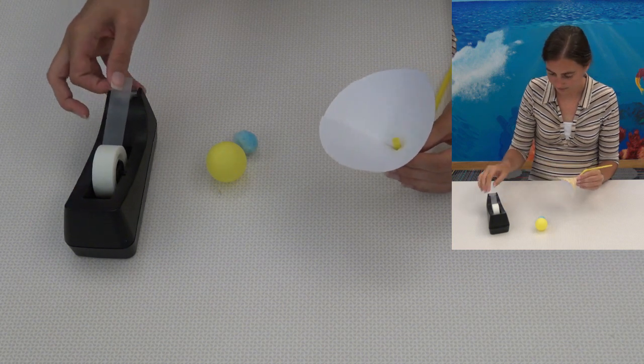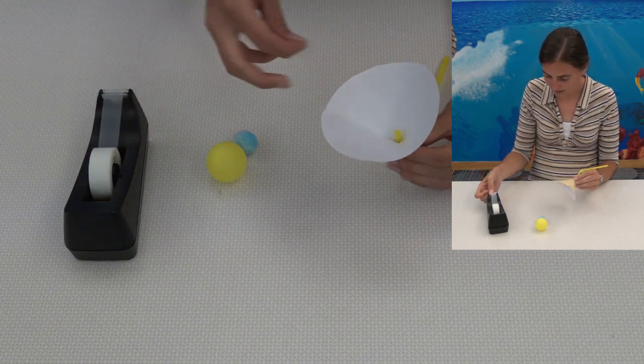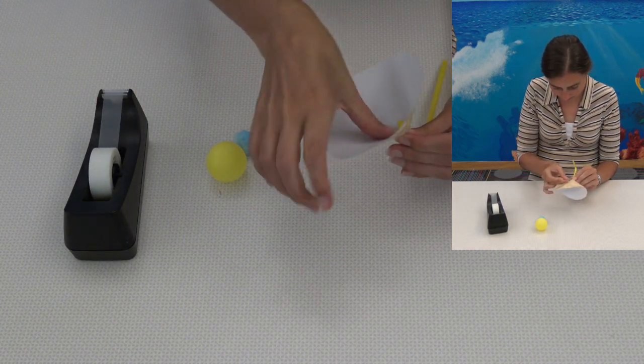To try it out, place either the ping pong ball or the pom-pom into the cone and blow through the straw to see if you can make it float.